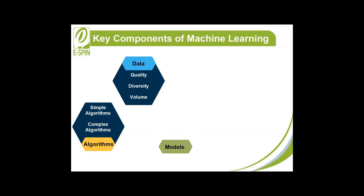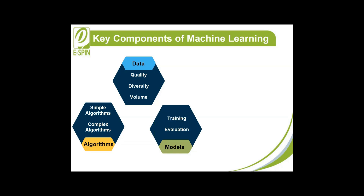3. Models are the outputs of machine learning processes. During the training phase, models learn from data, adjusting their parameters to minimize errors.